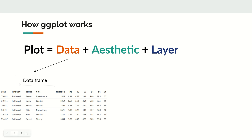A data frame is a 2D data structure where each row is one observation and each column is one feature. In the example we will be working with, this is a gene data frame where each row corresponds to one gene and the different columns include pathway, tissue, GDR, and mutation. It has to be in 2D form as a data frame — that is the data structure ggplot2 expects.